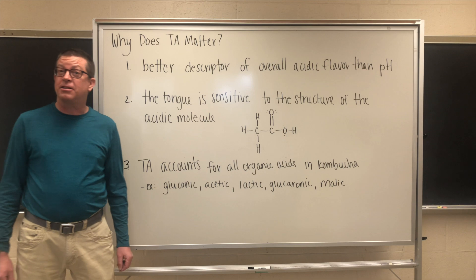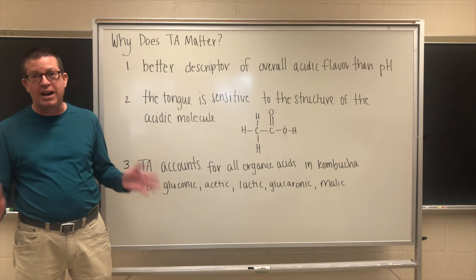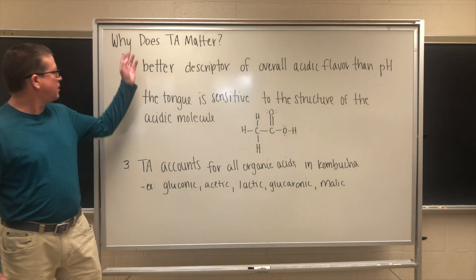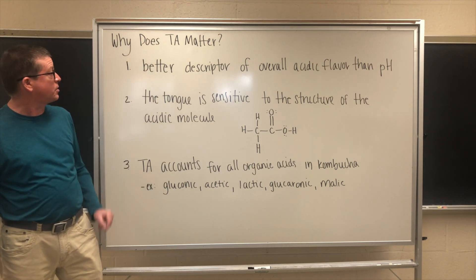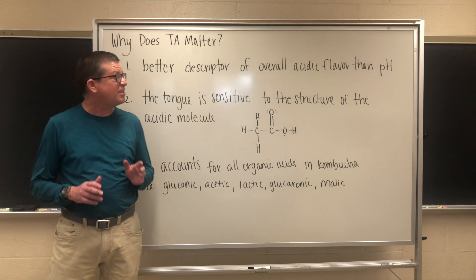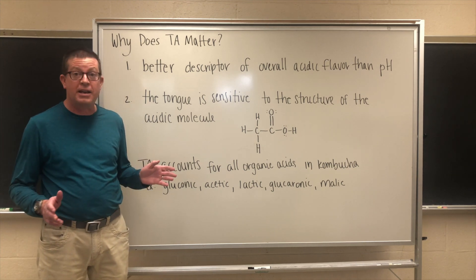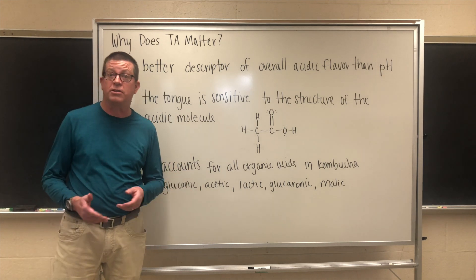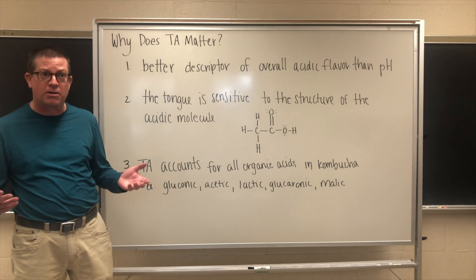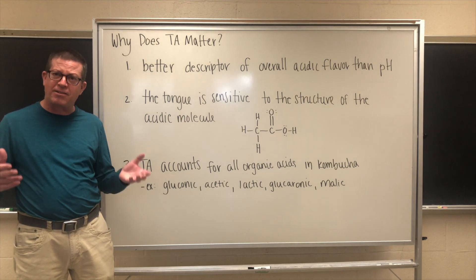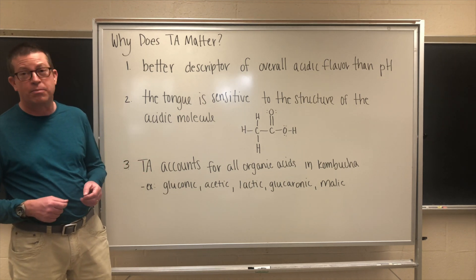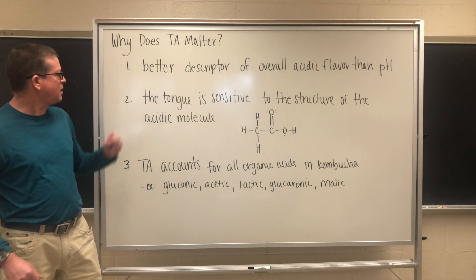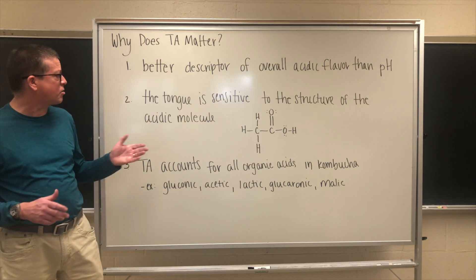Now that we understand how to measure titratable acidity, we have to ask ourselves as kombucha brewers why does this matter? First of all, the TA or titratable acidity is an overall better descriptor of the overall acidic flavor than pH. It gives us a better flavor profile of our kombucha. We know that kombucha is a wonderful sensory experience that is a nice balance between the sweet and the sour. Of course there are variations in sour, and that's what we care about.